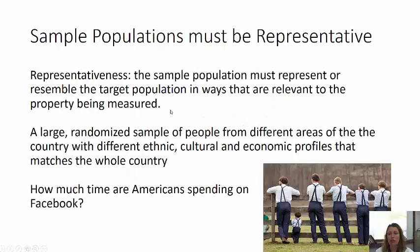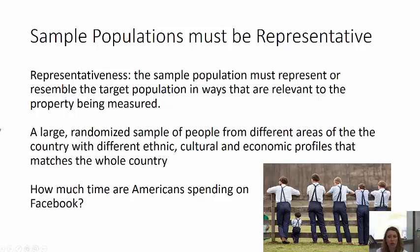The sample population must be representative. If you're trying to figure out what percentage of French people are overweight, you don't go and do your surveys at the gym because you'll get a skewed sample. Or you don't do it in urban Paris. If you want to know what percentage of all French people are overweight, you'd have to make sure your sample is representative. The sample population must represent or resemble the target population in ways that are relevant to the property being measured.